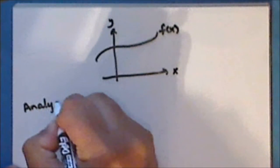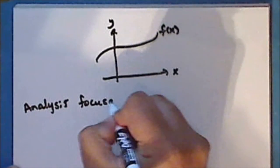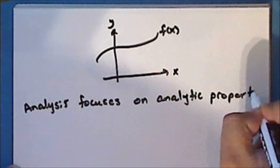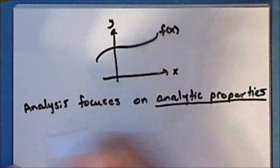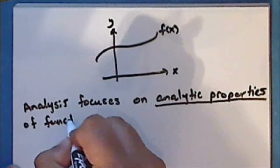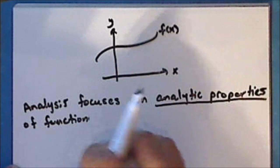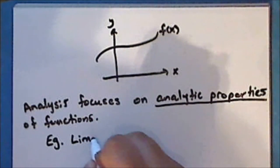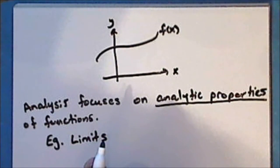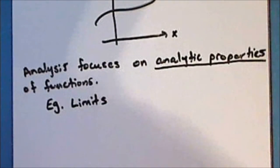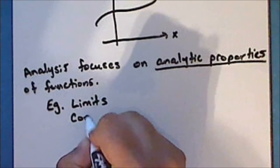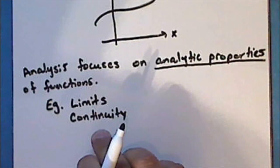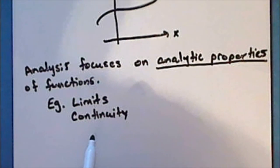Now analysis focuses on analytic properties of functions. For example, limiting behavior, both as we approach a particular point and as we approach positive or negative infinity. Continuity. Is a function defined and does the value of the function agree with the limit at a particular point or for all points in a given interval?